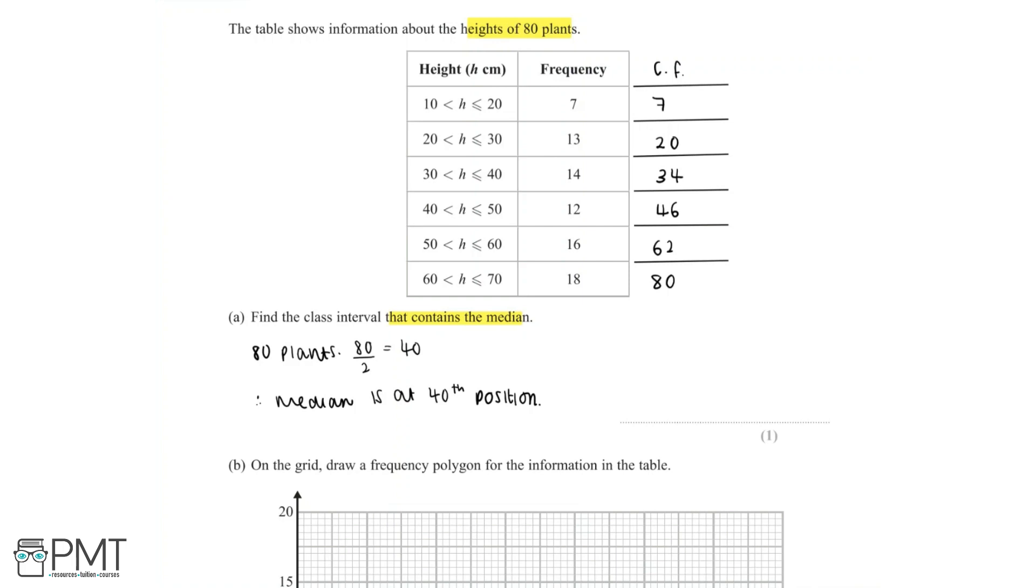So now let's continue on to the next interval. Between 30 and 40, our cumulative frequency would be 20 plus 14, which is 34. And so we still haven't quite hit 40.